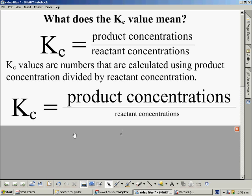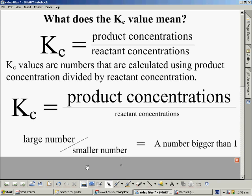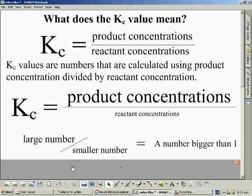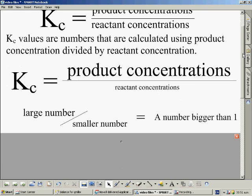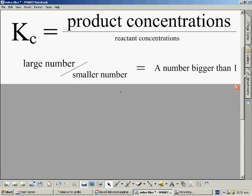Possibly the reaction may heavily favour the products which means the product concentration is much much higher as shown by the size of the two texts. This means that to calculate Kc we would do a large number divided by a small number. The answer we get would be larger than one. The bigger the difference the higher that number would be.